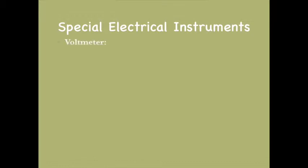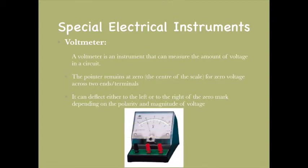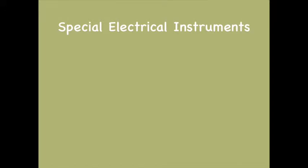The third instrument is the voltmeter, which is an instrument used to measure the amount of voltage. The pointer remains at zero for zero voltage and deflects either to the left or right depending on the polarity and magnitude of voltage. A diagram of the voltmeter is shown below.